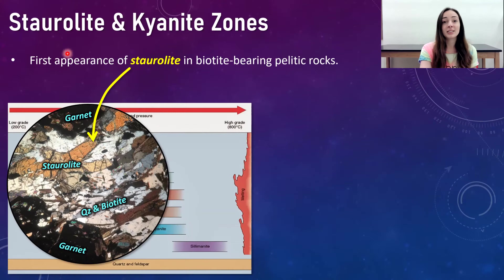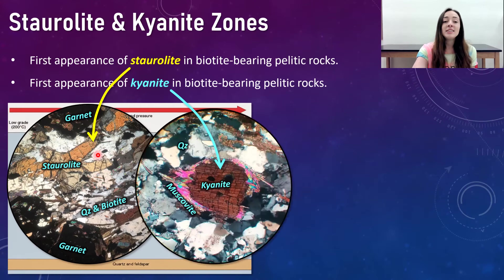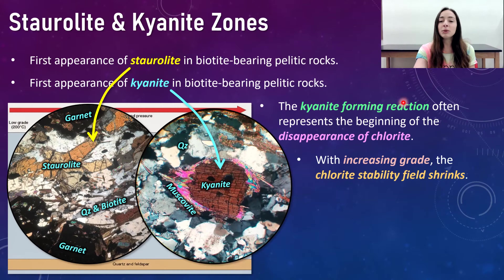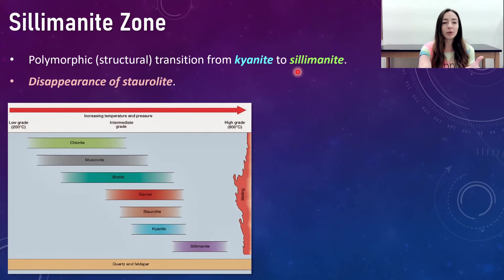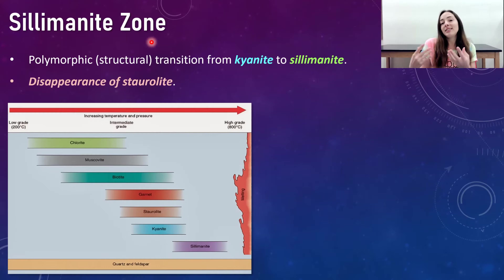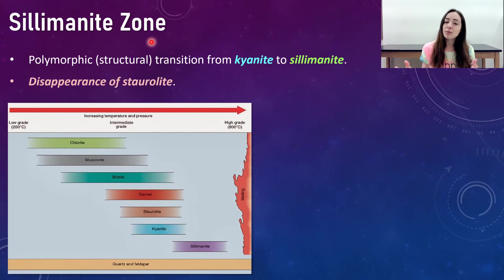The staurolite zone marks the first appearance of staurolite in biotite-containing pelitic rocks — you can see it twinned in thin section under cross-polars. The kyanite zone marks the first appearance of kyanite in biotite-bearing pelitic rocks; the kyanite-forming reaction actually represents the beginning of the disappearance of chlorite, whose stability field shrinks with increasing grade. As grade increases even more, kyanite structurally transitions into a different polymorph of the same composition: sillimanite — which is basically when minerals have the same composition but a different structure.